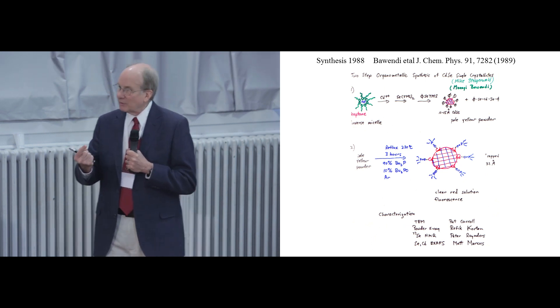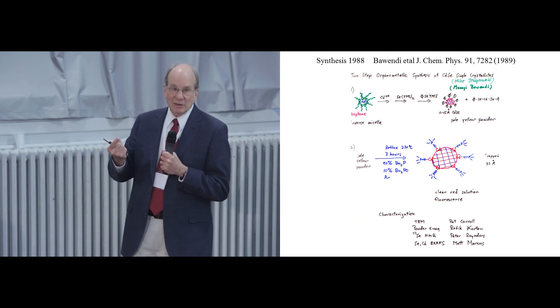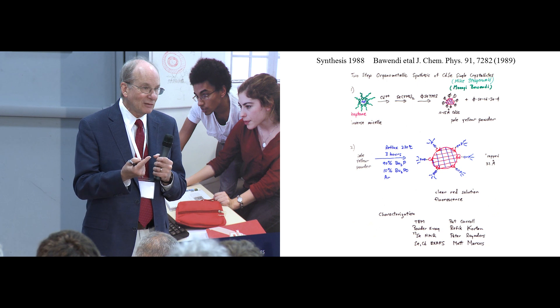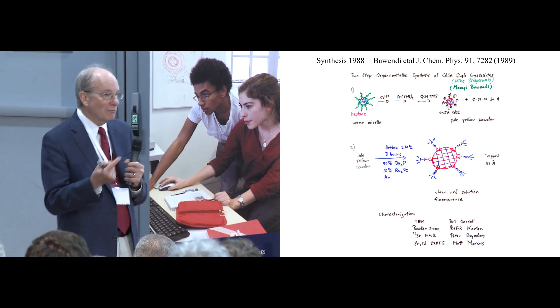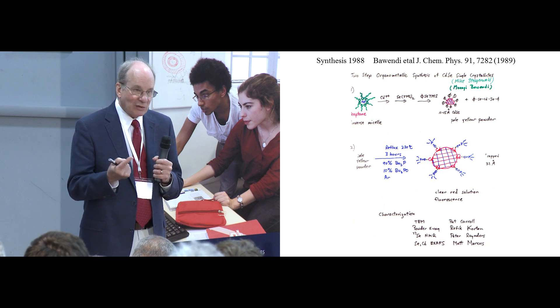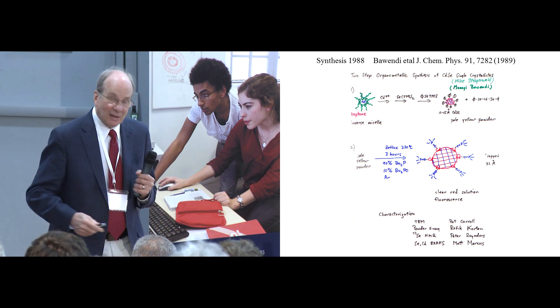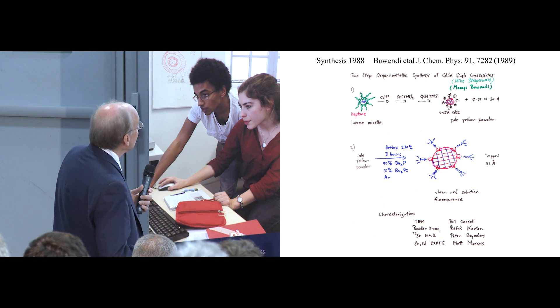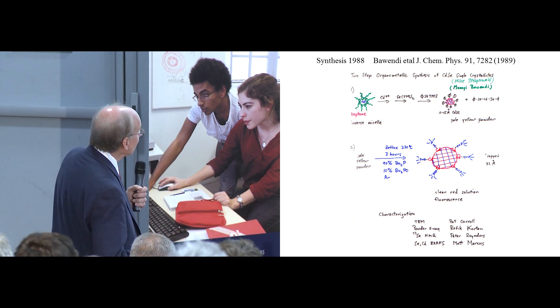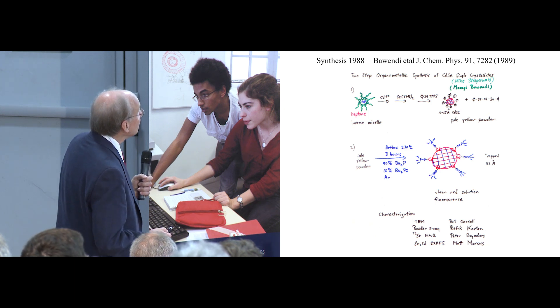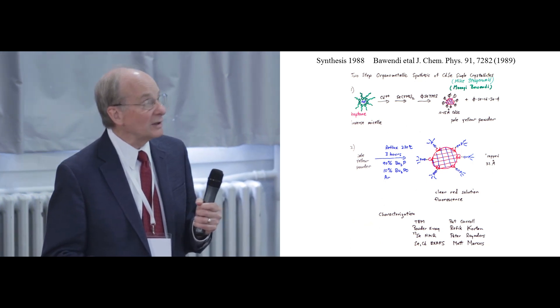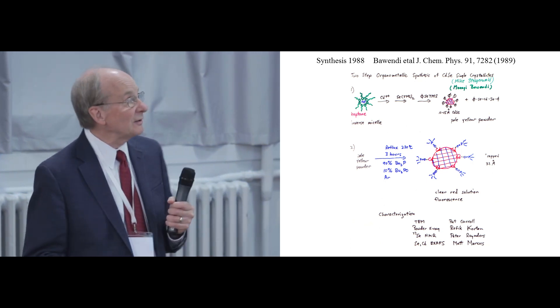So then we realized that we were making better quality particles by running this reaction at higher temperature. And so in the remaining months, we tried other Lewis base solvents. The first one was tributylphosphine. This was Moungi and Mike Steigerwald and myself were doing this at this point.